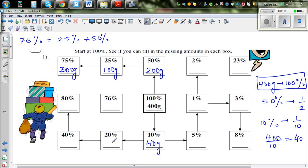So from 10% you can find 20% which is 80 grams. Double of 10% is 20%. And 40% is double of 20%. So it's 160. And 80% is double of 40%. So this is double of 160 which is 320 grams.